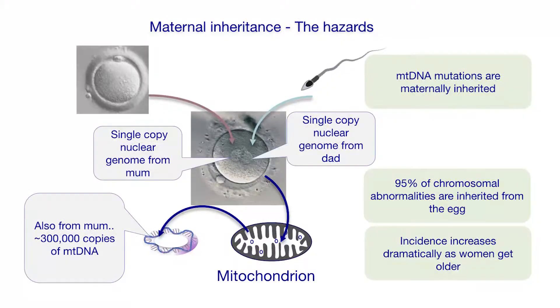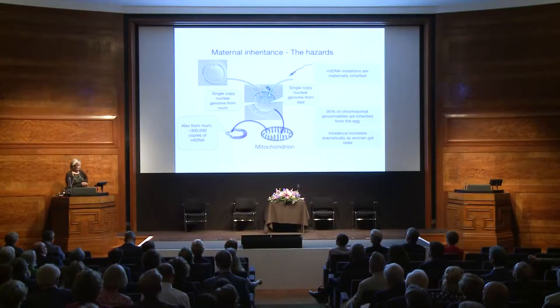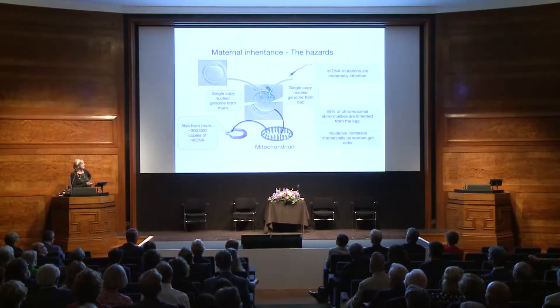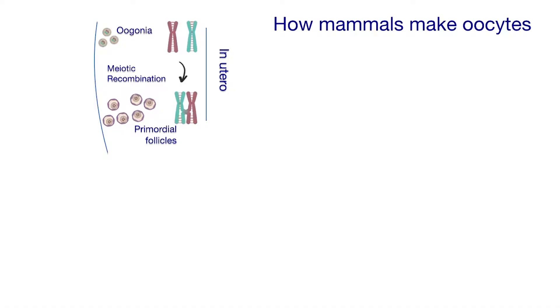So if a woman carries deleterious mitochondrial DNA mutations, she's at risk of transmitting serious disease to her child. Moreover, if this embryo has chromosomal abnormalities, there's a 95% chance that they will have originated in the egg. And the incidence of this increases dramatically as women get older. So this embryo is majorly at risk from its mother, actually. And when you see how we make oocytes, you'll wonder how we manage to be here at all.